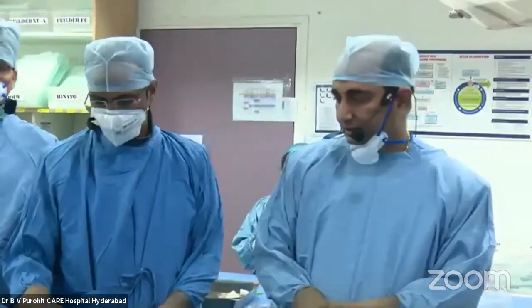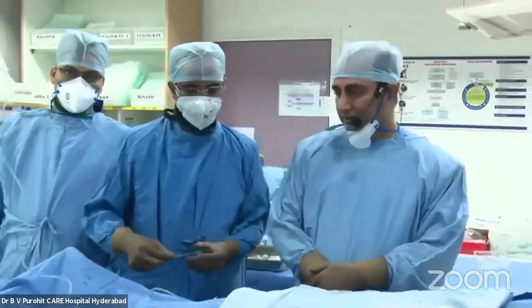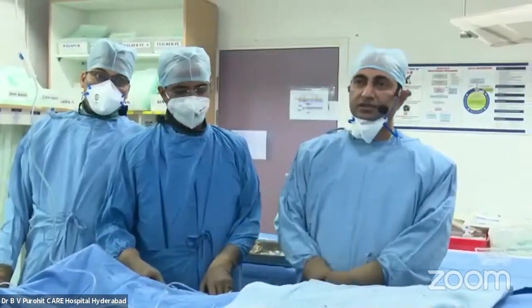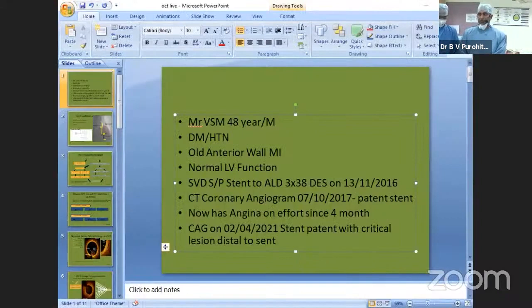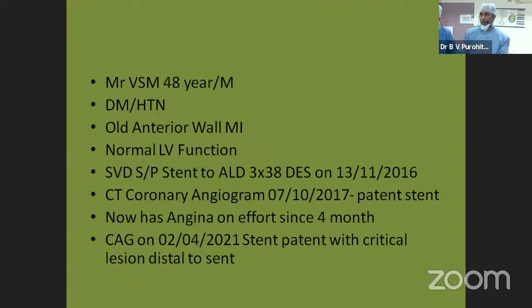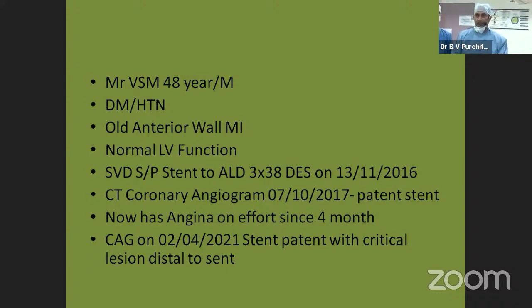I will be showing the basics — how we do a basic OCT and how to interpret the different images. Subsequently, all the complex cases will follow. This gentleman is a 48-year-old diabetic, hypertensive patient who came to us in 2016 with anterior wall MI. We did stenting to the LAD at that time with a 3x38 DES in November 2016, and he had normal LV function subsequently.